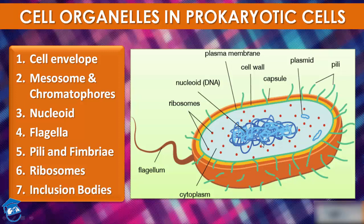The fluid matrix filling the cell is called cytoplasm. There is no well-defined nucleus — you cannot find a nucleus here like in eukaryote cells. Instead, genetic material is present in the form of a nucleoid. The genetic material is basically naked in the case of prokaryote cells, which is not enveloped by a nuclear membrane, unlike in eukaryotes.